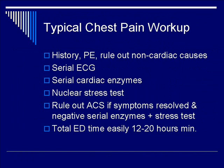Typical chest pain workup includes the history, physical examination to rule out non-cardiac causes, serial ECG, cardiac enzymes, possible nuclear stress test, and total ED time that can easily be 12 to 20 hours.